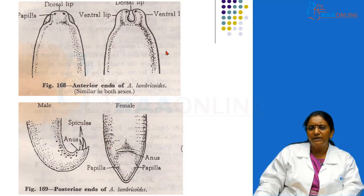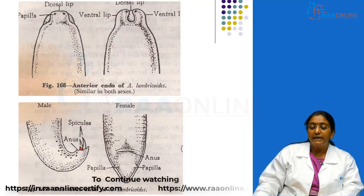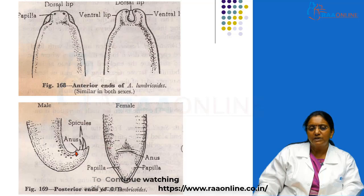This is the position of the anterior end or the mouth end — again we can see the dorsal lip and the two ventral lips, having fine teeth. This is the tail end or the posterior end of the worm. In the female the tail end is straight and conical, with the opening of the alimentary canal known as the anus. In the male the end is curved or coiled, with a common opening for both the reproductive and gastrointestinal tract. At the end there are finely sharp projections called copulatory spicules, which help in copulation.